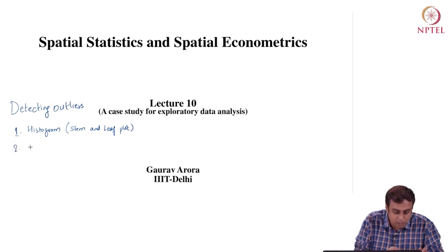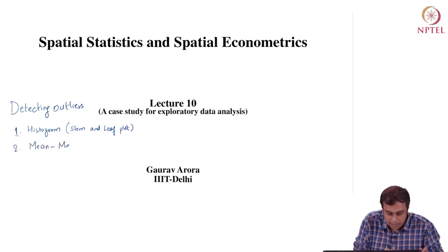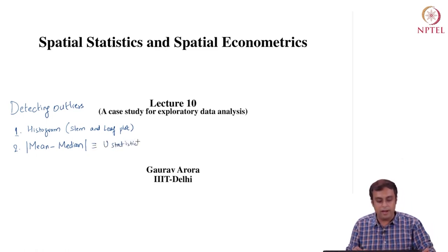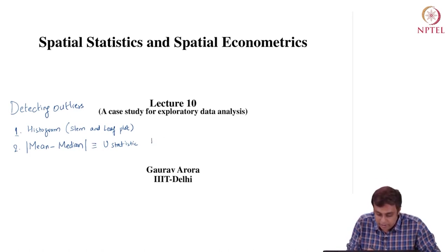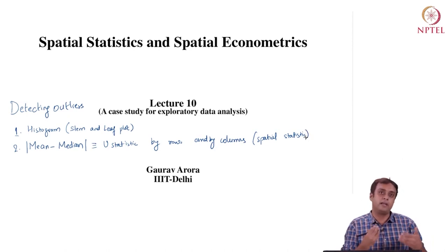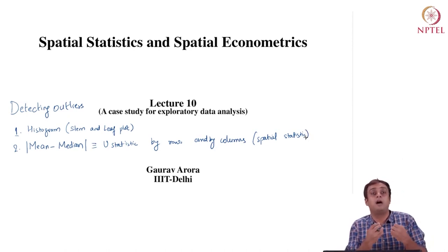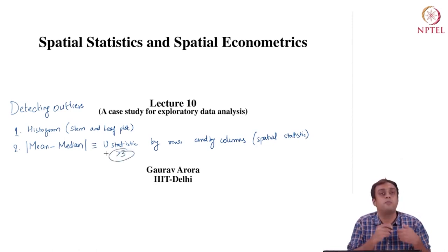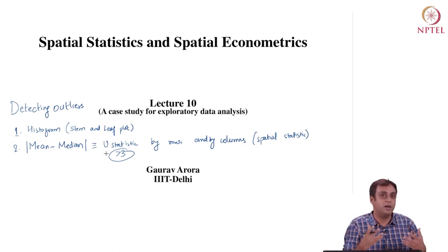Histogram by itself did not appreciate the spatial nature of the data. So the second strategy was a statistic called mean minus median and its absolute value, which we defined as the U statistic. This U statistic was calculated by rows and by columns, constructing a spatial statistic to help detect outliers. We said if mean and median are too far apart, we should be worried — specifically, if U was greater than 3, that is the point where an analyst should become concerned about outlier values.